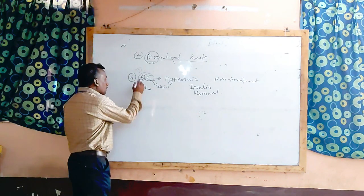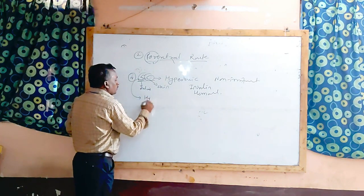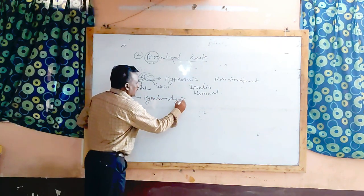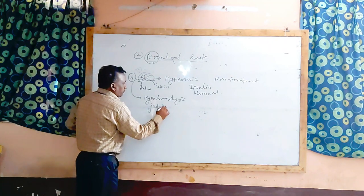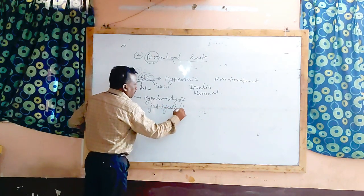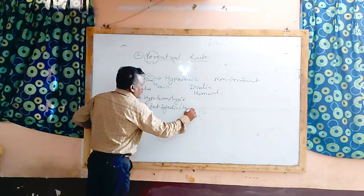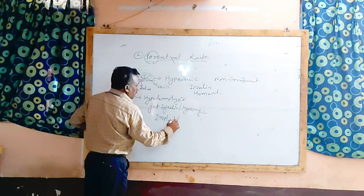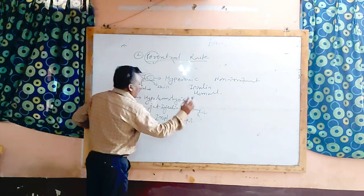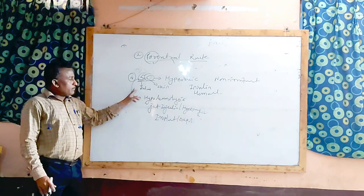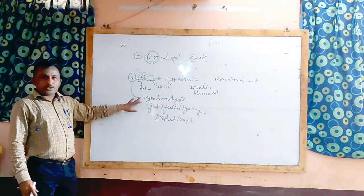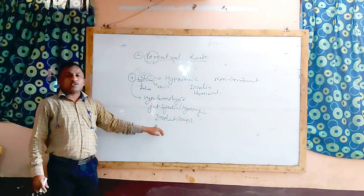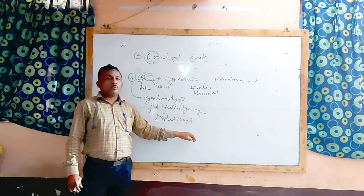There are three processes under the subcutaneous route. First is the hypodermoclysis process, second is the jet injection or hypospray method, and third is implants or depot formulation.